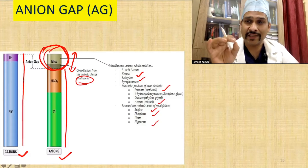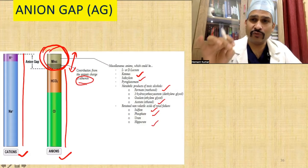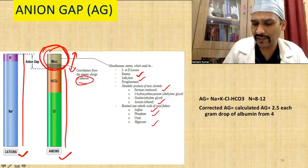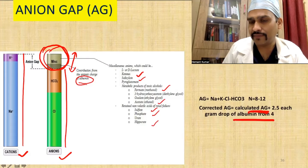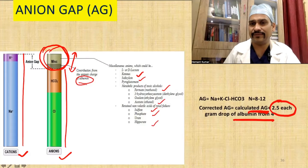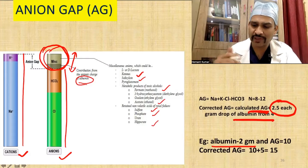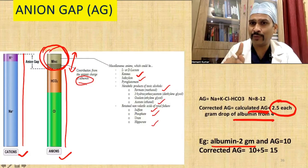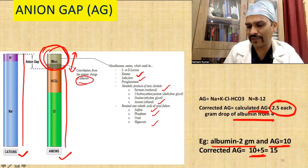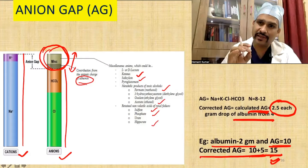In ICU and critical care medicine, most patients have albumin deficiency, so we must correct accordingly. Every decrease in albumin below 4 g/dL requires adding 2.5 to the anion gap for each gram reduction. For example, if a patient has albumin of 2 g/dL (which is 2 less than 4), we add 2 × 2.5 = 5. So if the anion gap is 10, the corrected anion gap becomes 15.